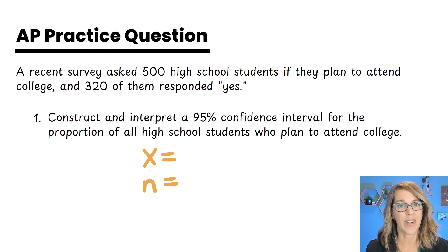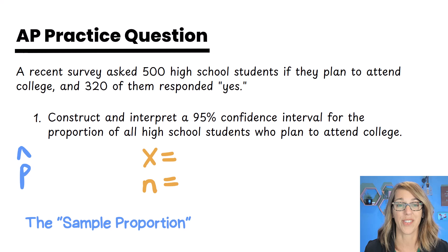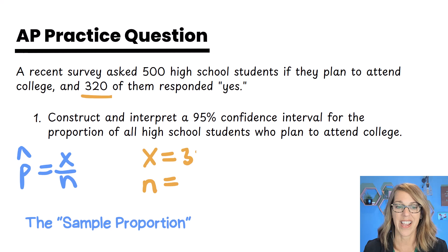What they're really asking for here is p hat which is our sample proportion. You could also call this a sample fraction or a sample percentage. It is x divided by n. After we do this example I'm going to show you a more challenging one where they give you just the sample percentage instead of these numbers. So in our case x is the smaller number that's 320 and n is the size of our sample which is 500.